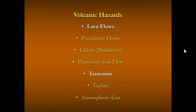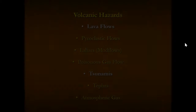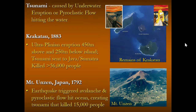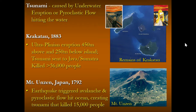Tsunamis are a threat caused by underwater volcanic eruptions, eruptions of islands, where the pyroclastic flow can hit the water, or the island itself can blow away. In the case of the Krakatoa volcano in Indonesia in 1883, the ultra-Plinian eruption blew about 200 meters off the mountain and another 200 meters below it, sending a tsunami to Java and Sumatra that killed over 36,000 people.